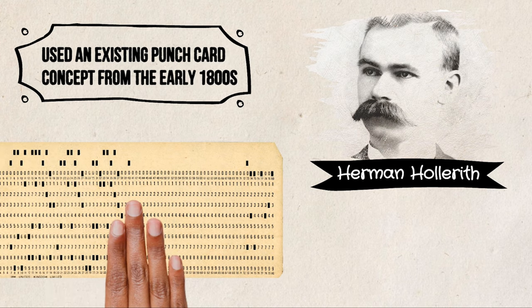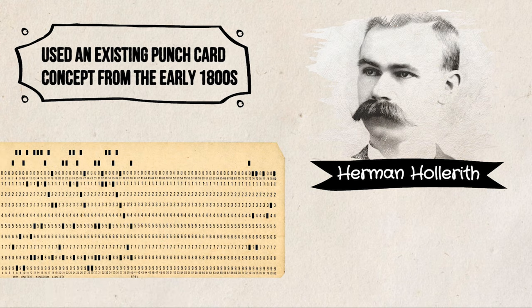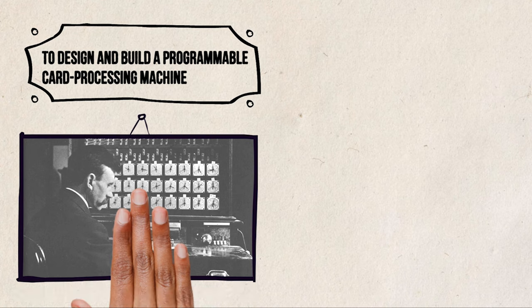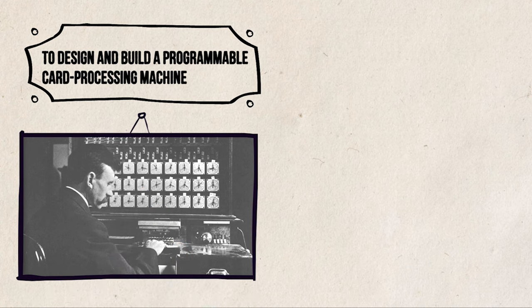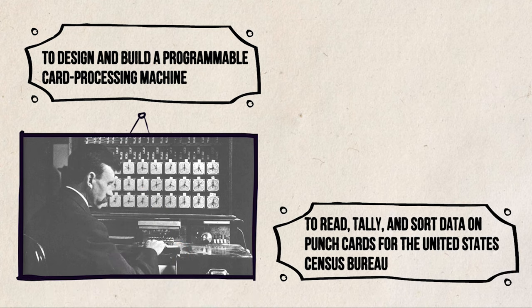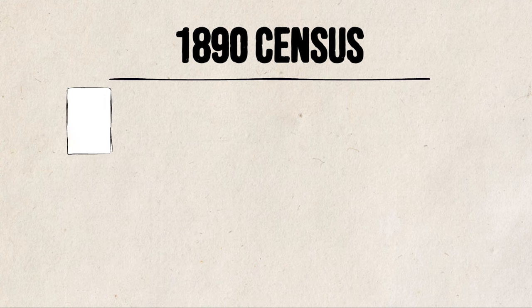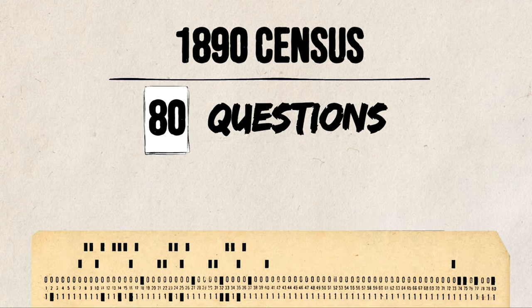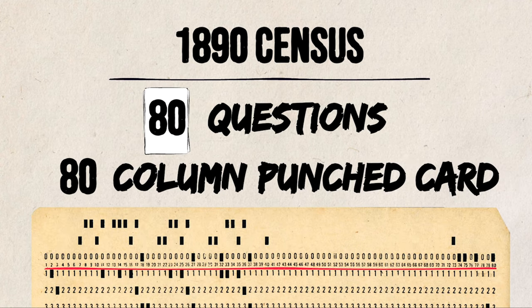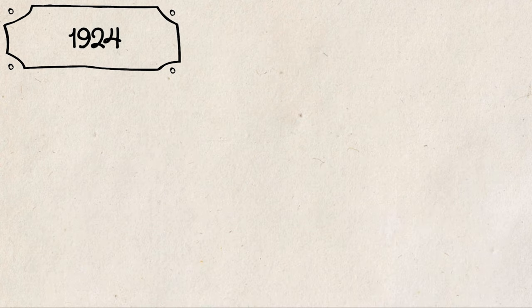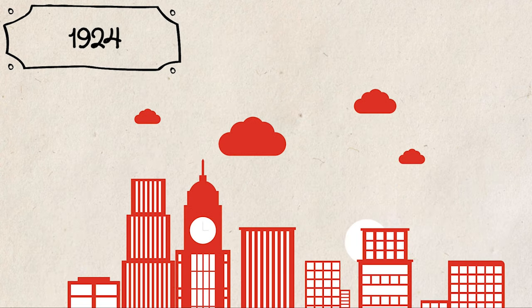Herman Hollerith used an existing punch card concept from the early 1800s to design and build a programmable card processing machine to read, tally, and sort data on punch cards for the United States Census Bureau for the 1890 census, which had 80 questions — hence the 80-column punch card. And in 1924, Hollerith founded the company that became IBM.